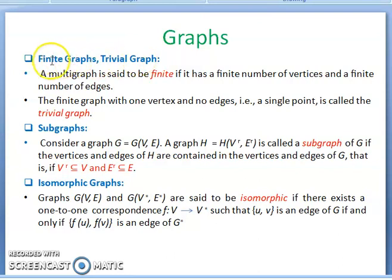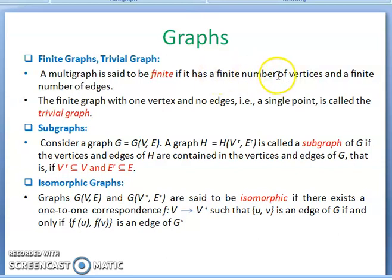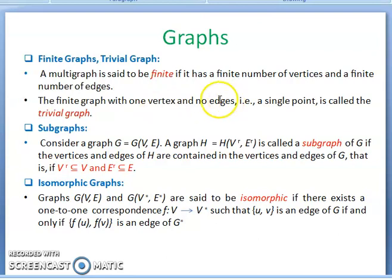The next terms are finite graph and trivial graph. A multigraph is said to be finite if it has a finite number of vertices and a finite number of edges — then that multigraph is called a finite multigraph. A trivial graph is a finite graph with one vertex and no edges — a single point is called a trivial graph.